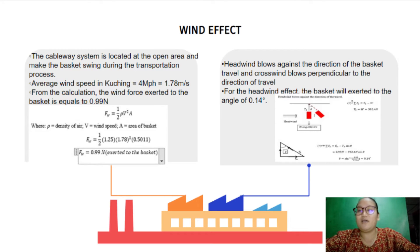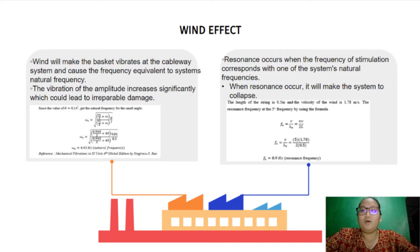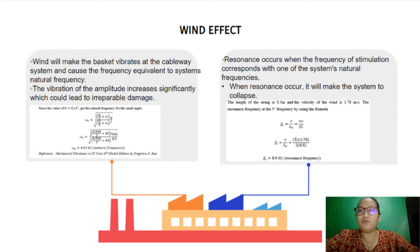Headwind blows against the direction of the basket's travel, and crosswind blows perpendicular to the direction of travel. For the headwind effect, the basket will be deflected to an angle of 0.14 degrees due to the presence of wind. Wind will cause the basket to vibrate at the cableway system, and the frequency equivalent to the system's natural frequency at the angle of 0.14 degrees is 4.43 Hz.